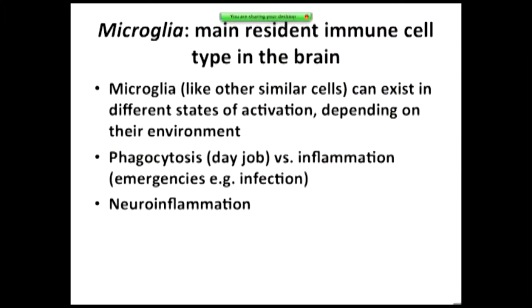In the brain, the main resident immune cell is the microglia. We used to think that the brain was immune-privileged and didn't have any immune cells, but now we know the brain is full of immune cells called microglia, similar to macrophages and dendritic cells. They migrate in during development and are very important for brain development. They can exist in different states of activation — the two polarization points being phagocytic or inflammatory.